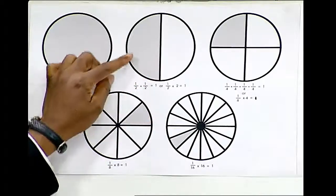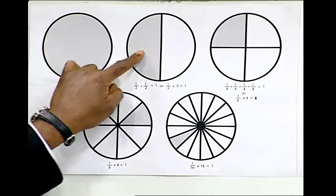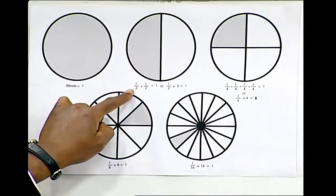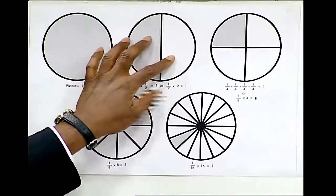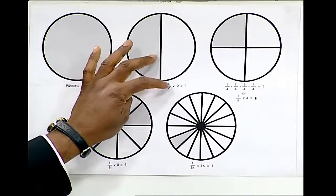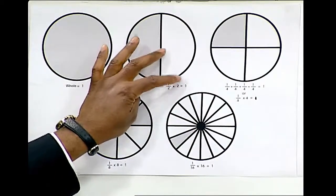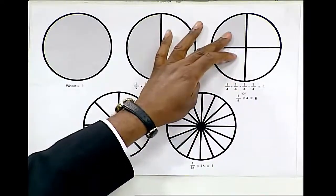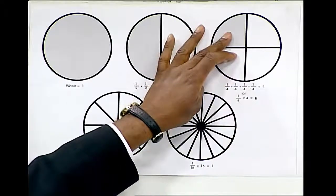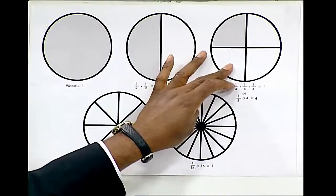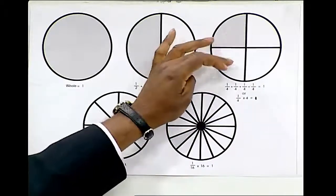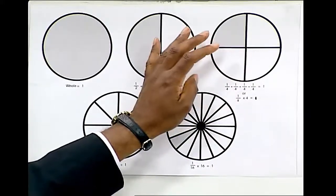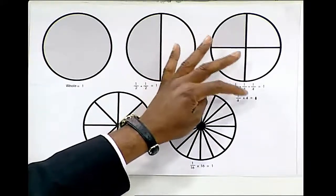Example number two shows one half of this circle is shaded, while one half of the circle is not shaded. One half plus one half is equal to one whole, or one half times two is equal to one. This particular circle shows one-fourth of the circle is shaded, whereas three-fourths of this circle are not shaded. One-fourth plus one-fourth plus one-fourth plus one-fourth is equal to one, or one-fourth times four is equal to one.